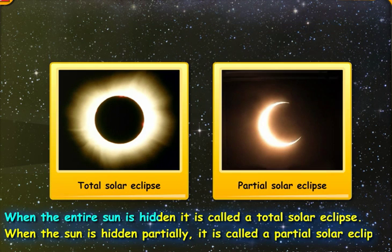When the entire sun is hidden, it is called a total solar eclipse. When the sun is hidden partially, it is called a partial solar eclipse.